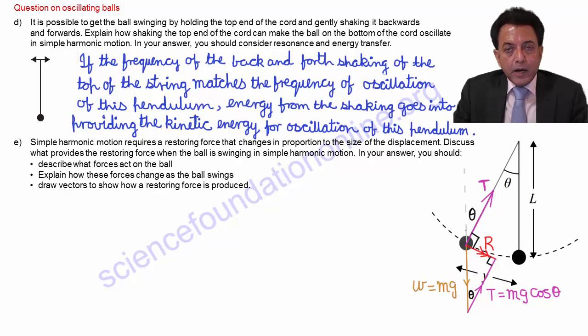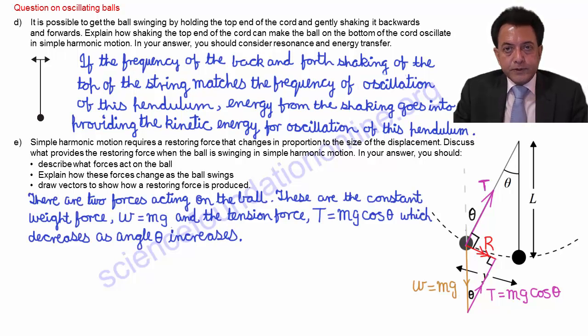So with reference to our diagram, we can write that there are two forces acting on the ball: the constant weight force w equal to mg, and the tension force T equal to mg cos theta, which decreases as the angle theta increases.